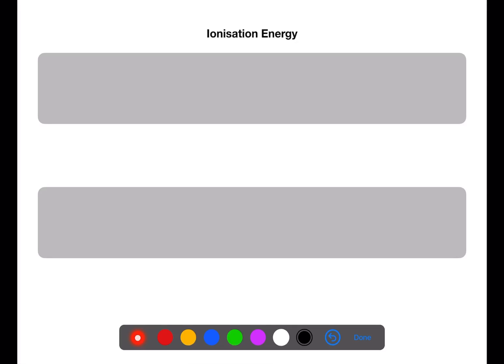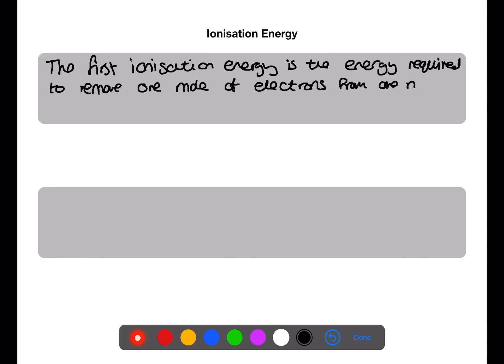The second trend we're going to look at is ionization energy. The first ionization energy is the energy required to remove one mole of electrons from one mole of atoms in the gaseous state. It can be represented as follows, where E is any element. It's important that you show state symbols when writing these equations.